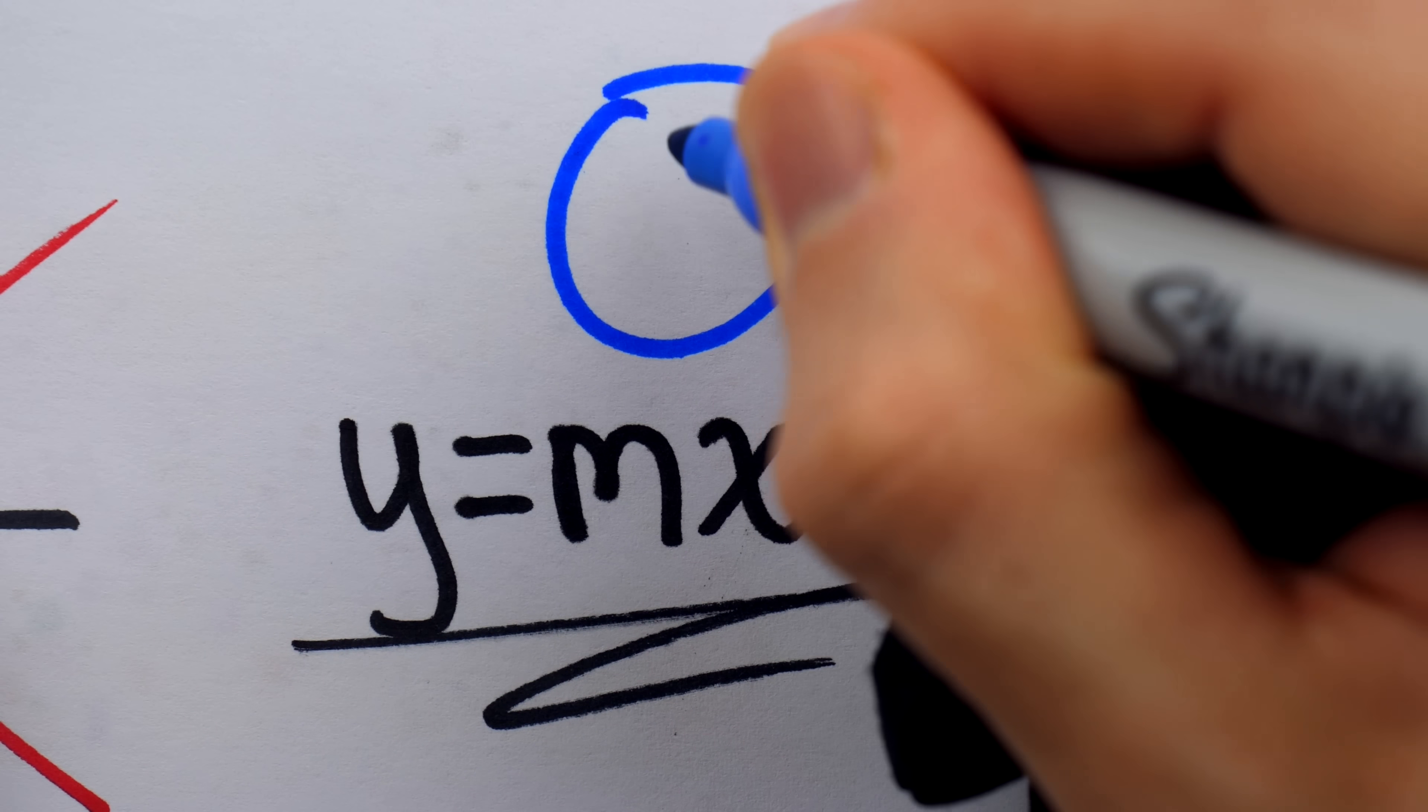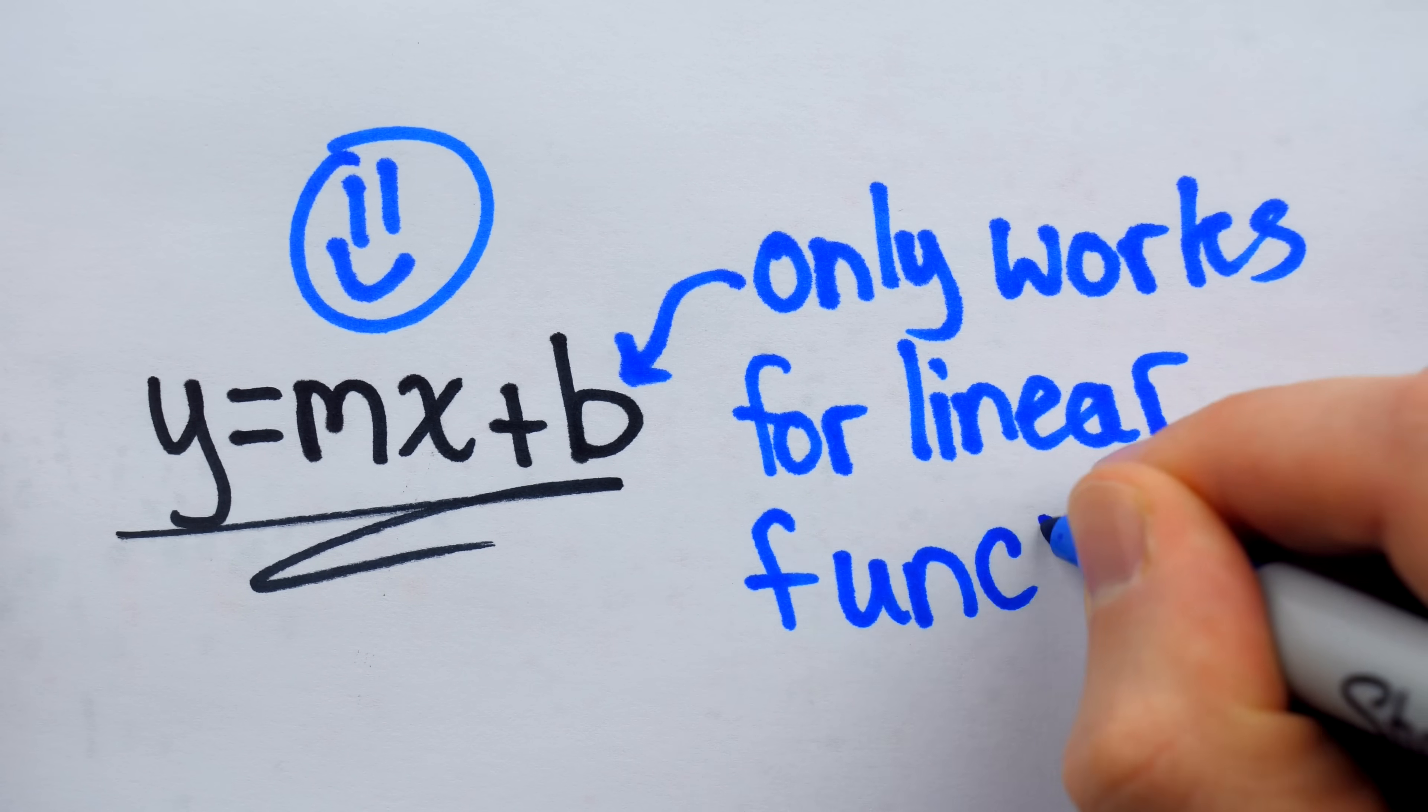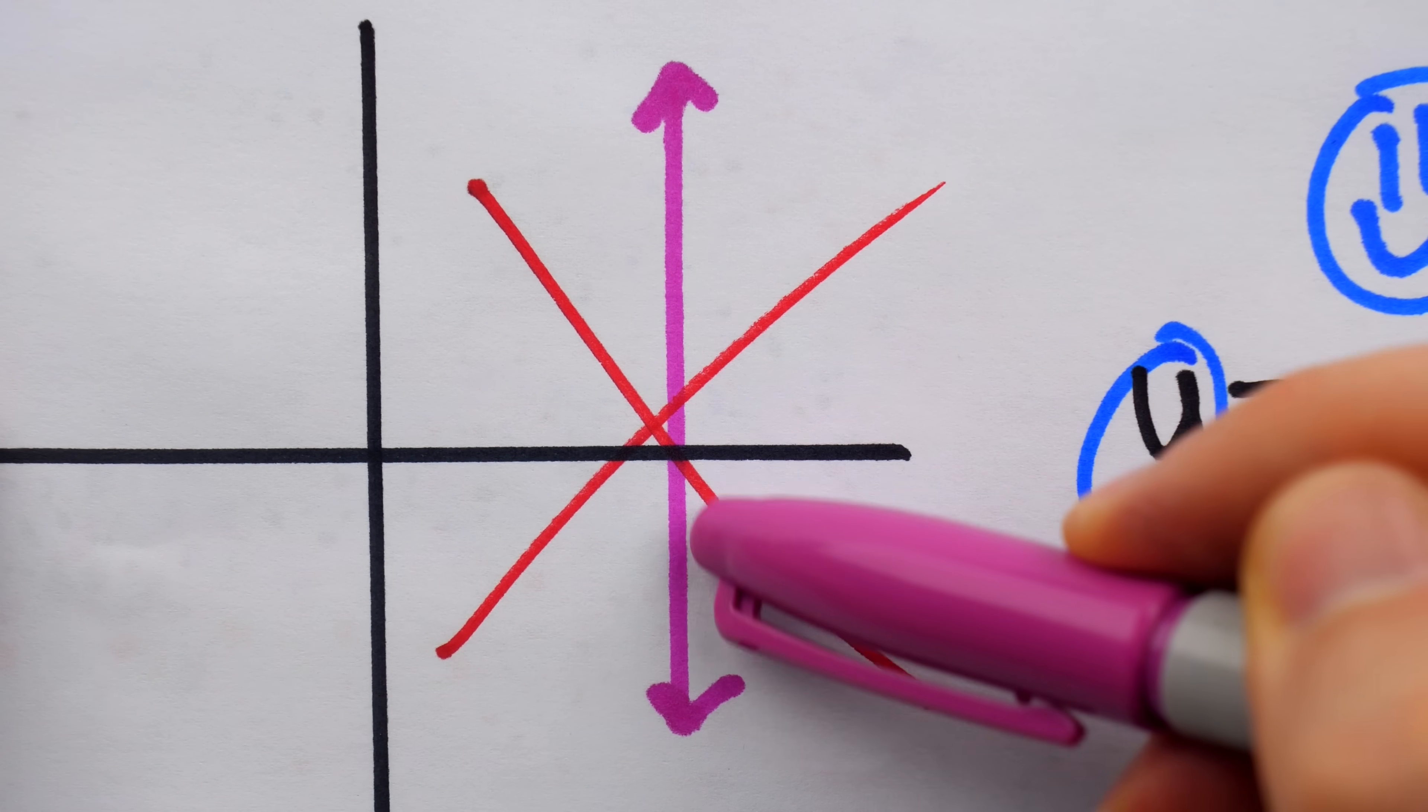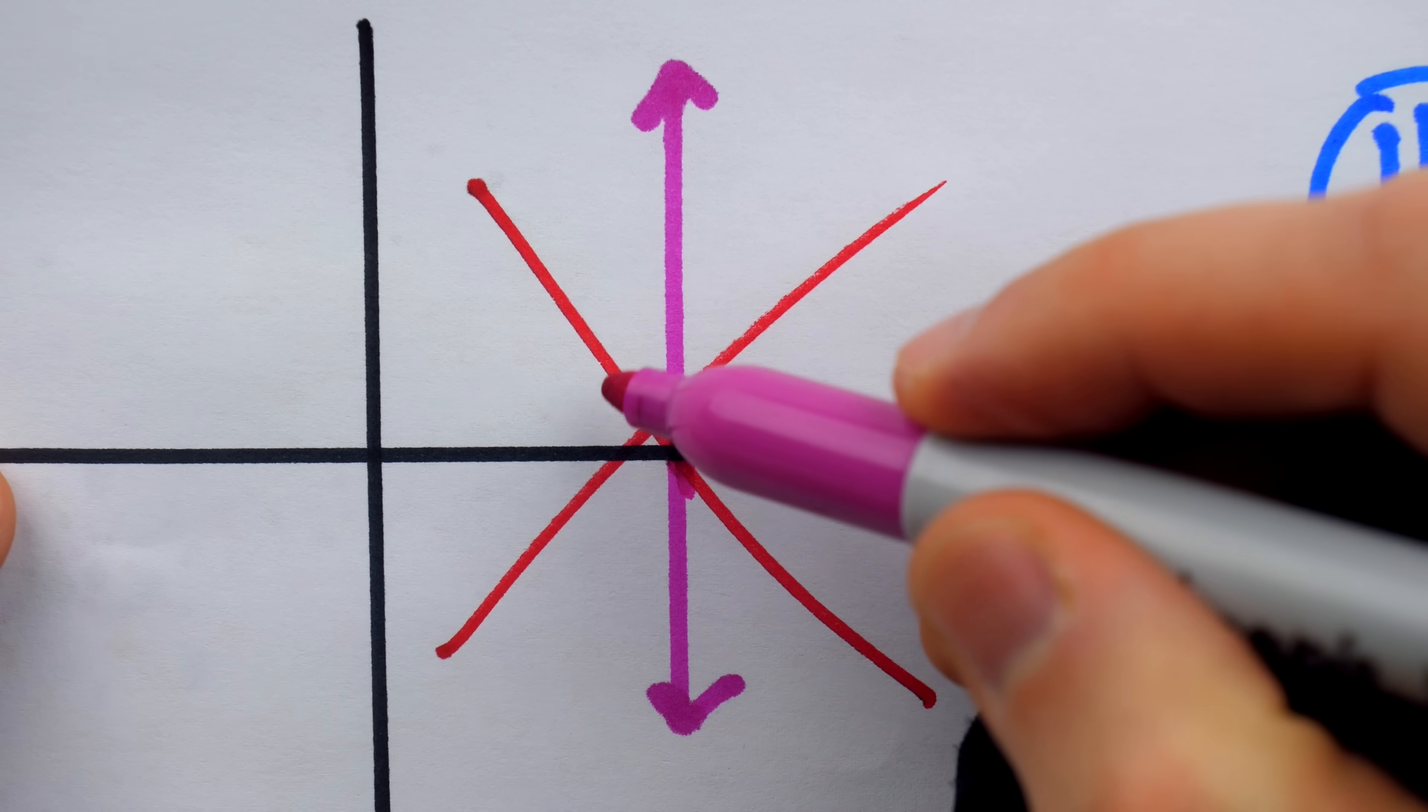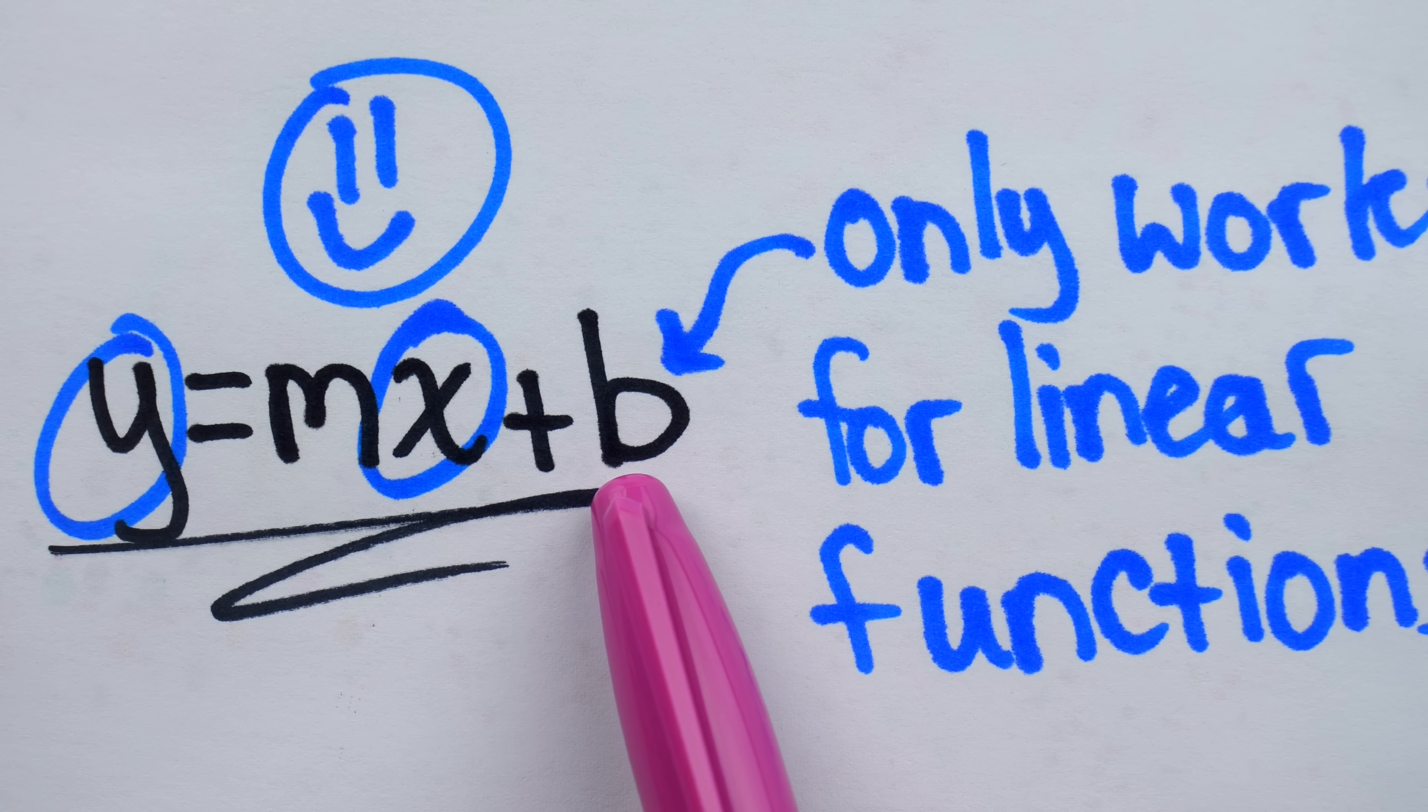Lots of students love slope-intercept form. But slope-intercept form only works for linear functions, where y is a function of x. In a vertical line, y is not a function of x. For a particular x value, we don't get one particular y,